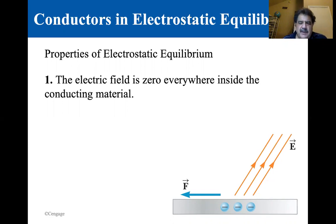We can understand property one by thinking about what would happen if it were not true. If there were an electric field inside the conductor, the free charge there would move and a flow of charge, that is a current, would be created. If there were a net movement of charge, then we're not in electrostatic equilibrium.